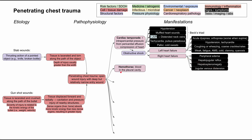Another problem following penetrating chest trauma is hemothorax — blood in the pleural cavity. You have the membrane surrounding the lungs (the pleural cavity) filling with blood, which might happen if a blood vessel is broken and bleeds into the pleural space. Symptoms include respiratory distress, dyspnea, and hypoxia.